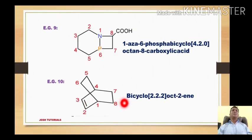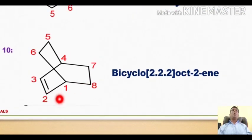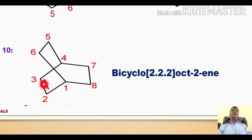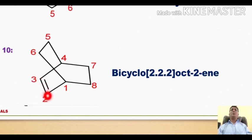Example 10: Two cycles attached with bridged atoms at positions 1 and 4, and a double bond between positions 2 and 3. Total 8 atoms gives 'oct-'; the double bond between C2 and C3 makes it 'oct-2-ene'. Each route between the bridged atoms has 2 atoms, so the bracket is [2.2.2]. The name is bicyclo[2.2.2]oct-2-ene.